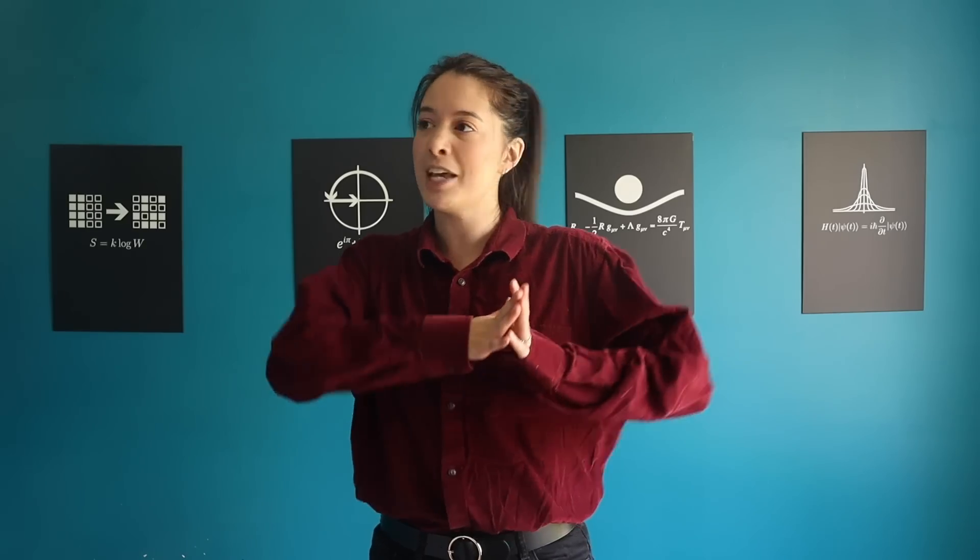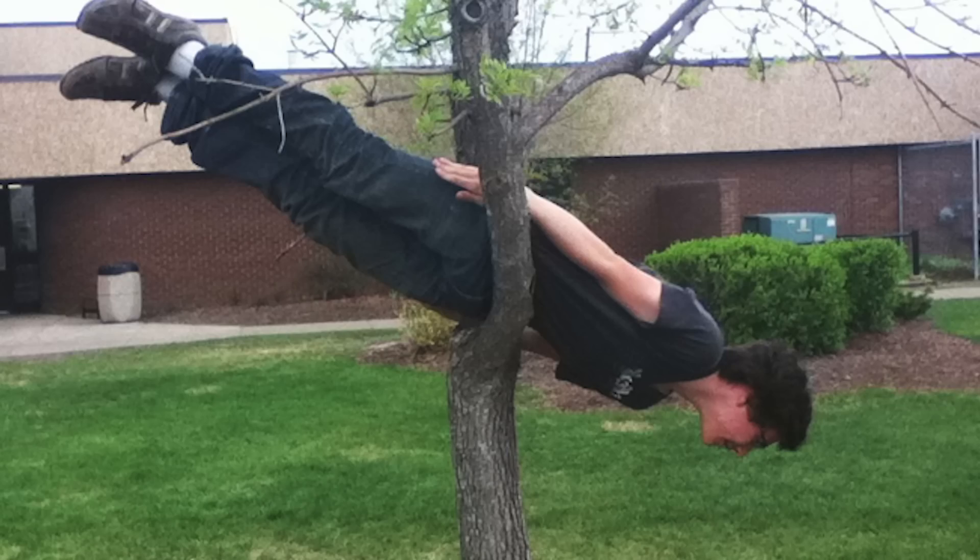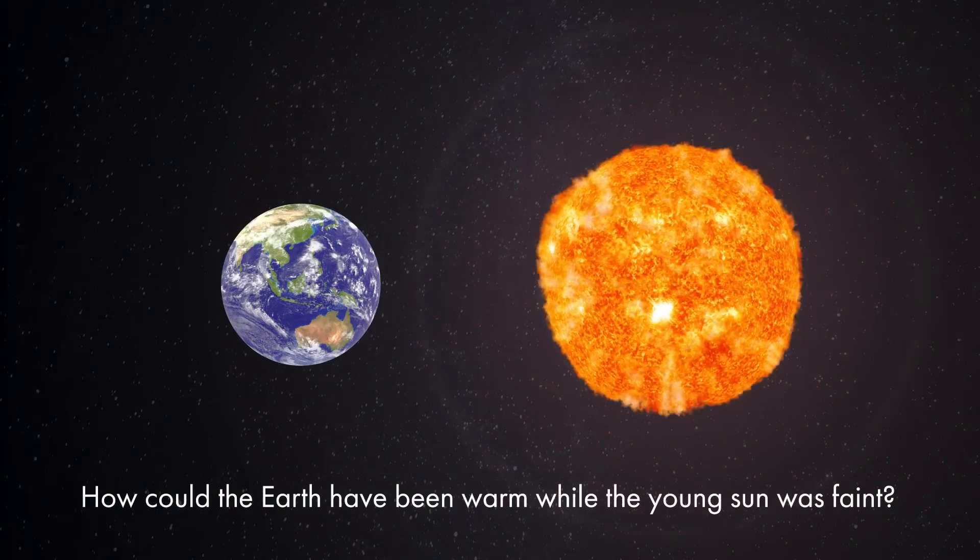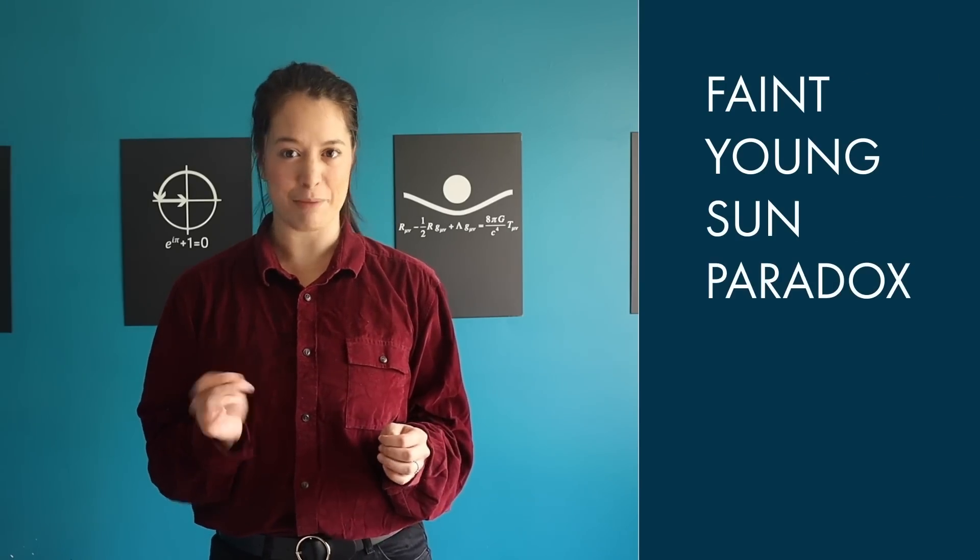As a consequence, life was able to evolve and flourish on our young little planets. But this brings up another interesting question. How could the Earth have been warm while the young sun was faint? This is called the faint young sun paradox.